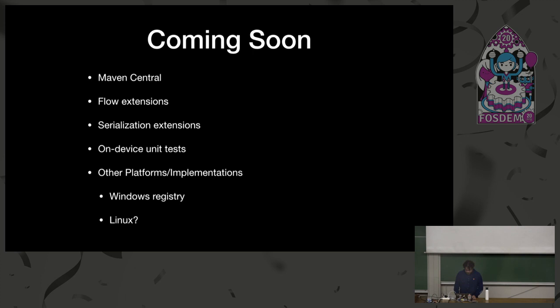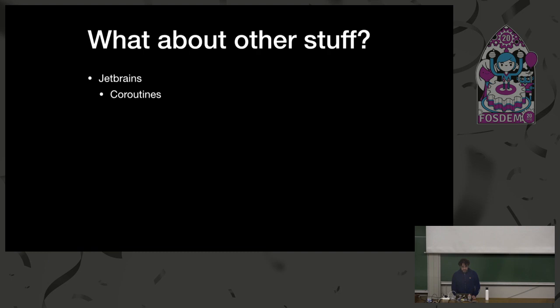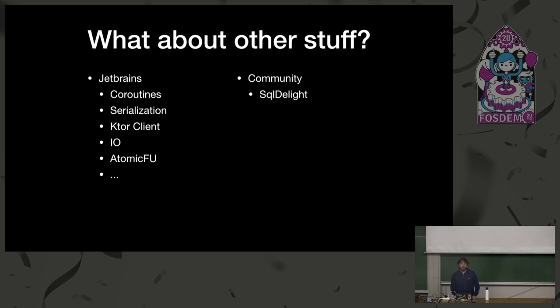What other stuff is out there? JetBrains has a bunch of libraries they've been working on — the three big ones are coroutines, serialization, and the Ktor client, which essentially give you your default HTTP stack in multi-platform, which is pretty useful. And the community has been putting out some libraries too — one notable one is SQLDelight, which gives you SQLite access in your shared code, plus a couple other community libraries.